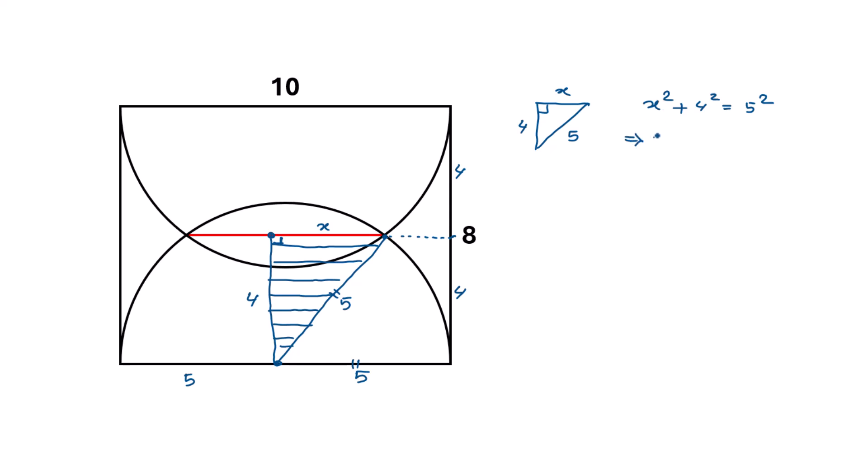Or x squared plus 4 squared is 16, is equal to 25. Or taking this 16 to the right side we will get x squared is equal to 25 minus 16.